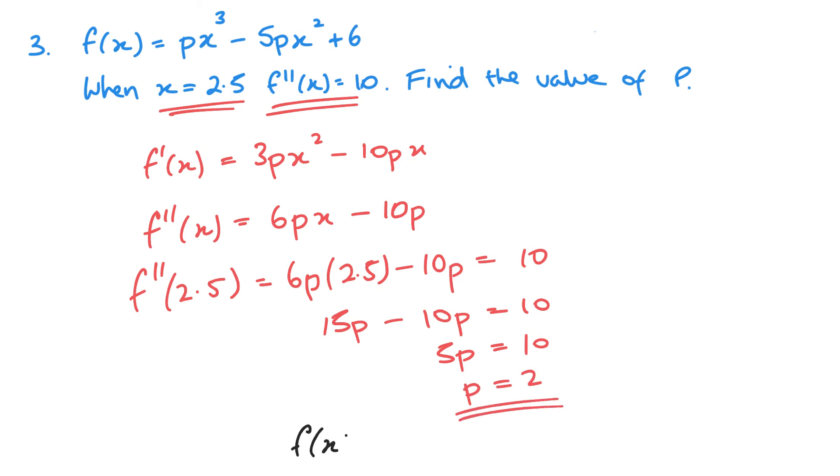So, another way of writing f of x would be 2x cubed minus 10x squared plus 6.